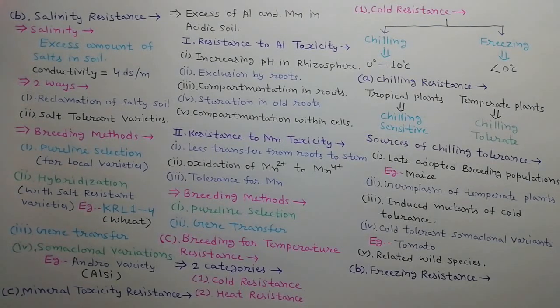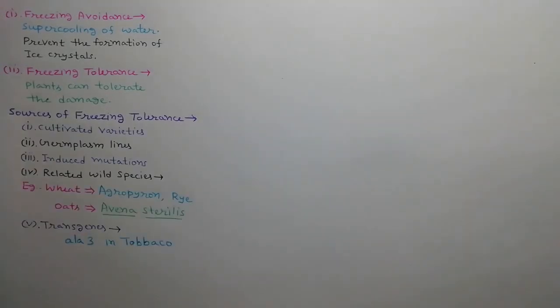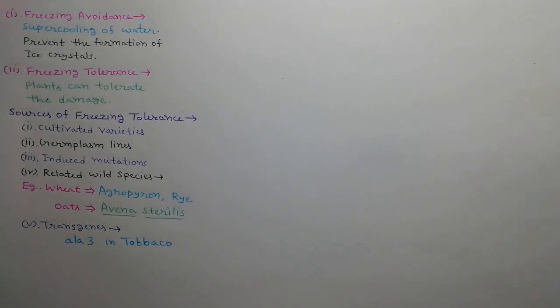Freezing resistance is of two types: freezing avoidance and freezing tolerance. In freezing avoidance, water gets super-cooled, as a result ice crystals are not formed. In freezing tolerance, plants can tolerate the damage by freezing. Sources of freezing tolerance include cultivated varieties, germplasm lines, induced mutations, related wild species such as Agropyron and rye for wheat, and Avena sterilis for oats, as well as transgenes — chemically synthesized antifreeze protein genes, such as ALA3 in tobacco.